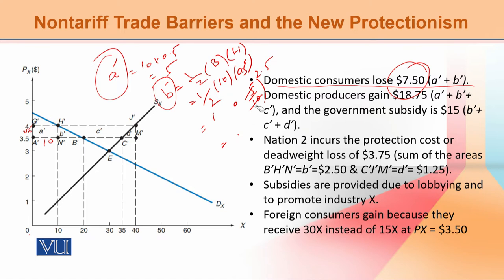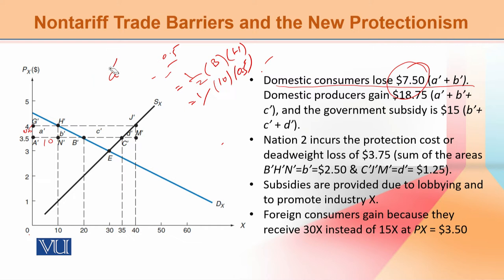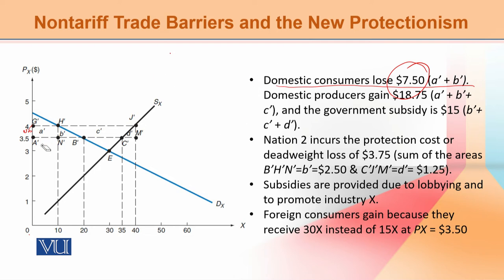اب ہم دیکھتے ہیں کہ اس case کے اندر producer کو کس طریقے سے gain ملتا ہے۔ Obviously اگر prices زیادہ ہیں تو major player جس کو فائدہ ہوتا ہے وہ producer ہے۔ Producer کا gain ہے A-bar, B-bar, and C-bar — پہلے جب price یہ تھی اور اس کے بعد جب price بڑھتی ہے۔